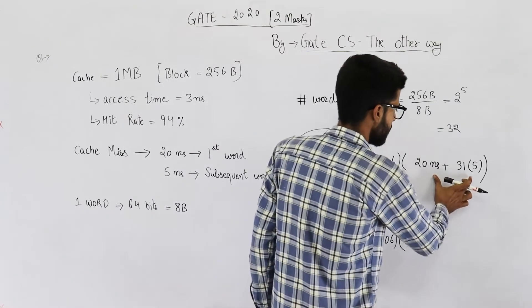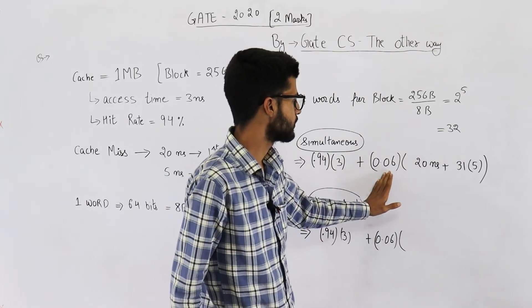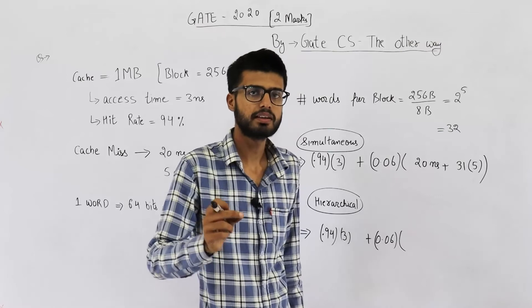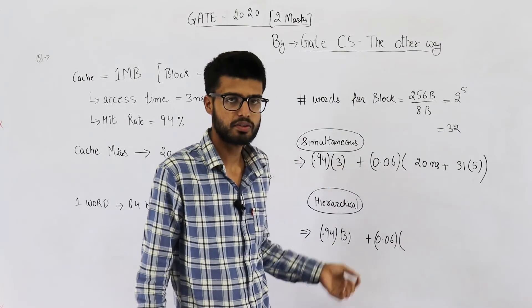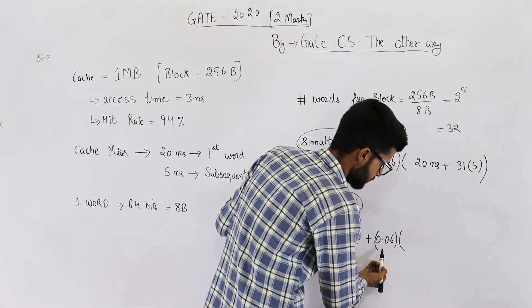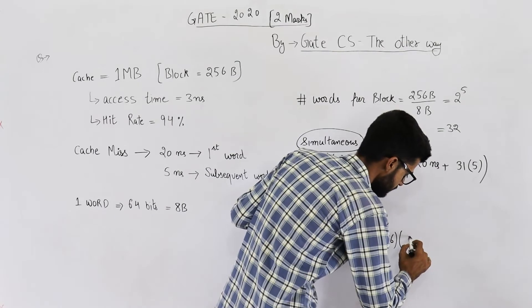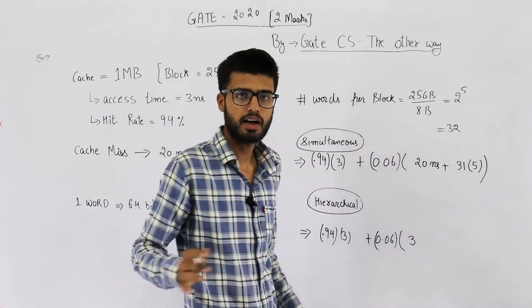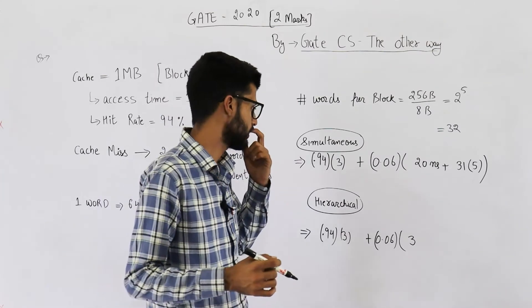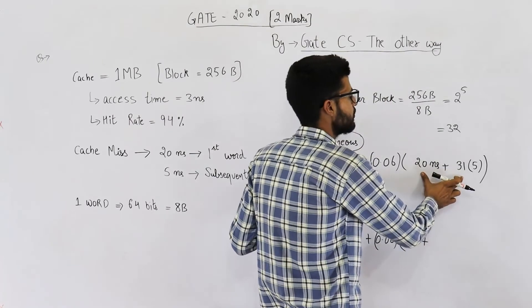This part is also going to be the same, but whenever there is a miss, to determine that there was a miss we need to spend 3 nanoseconds. So in these 6 percent of the cases, first 3 nanoseconds are gone just to determine that there was a miss. Whenever we were searching in the cache, then this much time is required to get the data from main memory. So this is your answer.